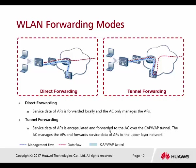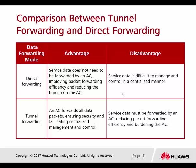In the diagram, the blue line represents the CAPWAP tunnel and the red dotted line represents the user data. In direct forwarding mode, when a user wants to forward data or access the internet, the data can go directly to the gateway and out to the network without going through the AC. In tunnel forwarding mode, all user data must use the CAPWAP tunnel, and all data frames are sent back to the controller, which then forwards the data to the network.